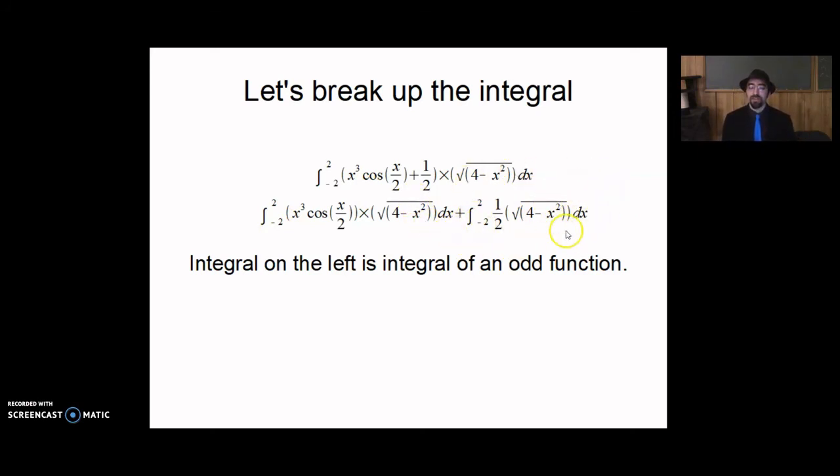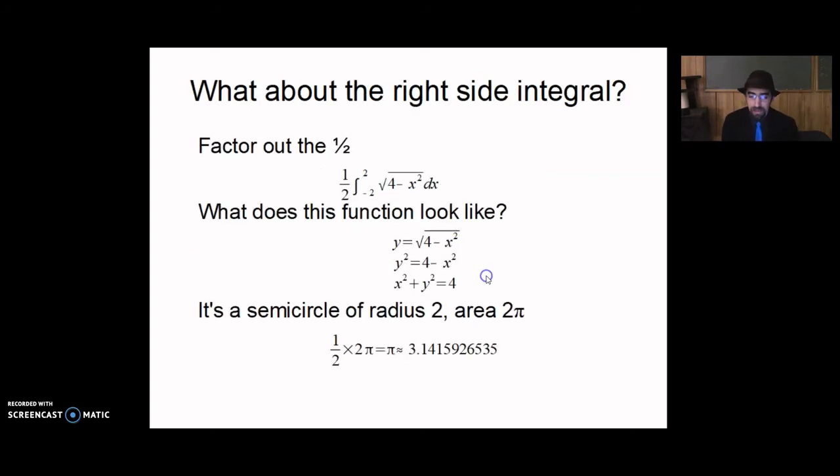This function here, this integral here, integral from negative two to two of one-half square root four minus x squared dx. If you try to integrate that with conventional means, there are some tricks that you can use. I even talked about one of them in a recent video, but there's actually a way of doing this, again, without any anti-differentiation.